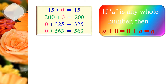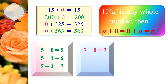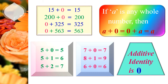Let's see additive identity with one example. Five plus zero equals five. Five plus one equals six. Five plus two equals seven. Seven plus zero equals seven. Eight plus one equals nine. Six plus zero equals six. Here, zero added to any number gives the same value — adding zero to any number does not change the value. For this reason, we call zero the additive identity.